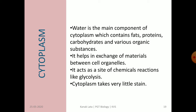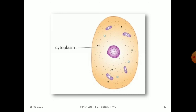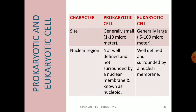Here you may observe the location of cytoplasm in the cell. The last topic of this session is the differences between prokaryotic and eukaryotic cells. Regarding size, prokaryotic cells are generally small, 1 to 10 micrometers, and eukaryotic cells are generally large, 5 to 100 micrometers. Regarding the nuclear region, in prokaryotes it is not well defined and not surrounded by a nuclear membrane, and is called the nucleoid, whereas in eukaryotic cells the nuclear region is well defined and surrounded by a nuclear membrane.